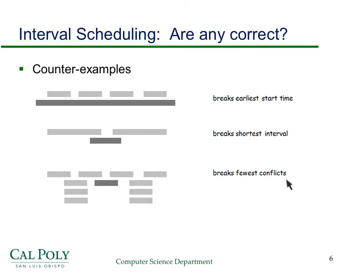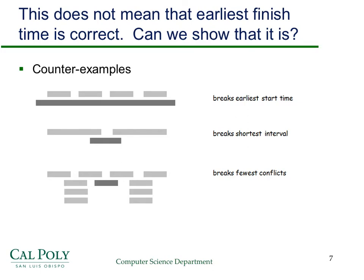The counterexample for fewest conflicts is the most complex. If you pick the job with the fewest conflicts — the one that conflicts with only two others — you can't pick either of those two conflicting jobs. So you might end up picking only three jobs total. But it's pretty obvious that you can actually get four jobs in a compatible set. These counterexamples don't mean that earliest finish time is correct — they just eliminate these three candidates. The question now is: can we show that earliest finish time is a correct greedy algorithm for maximizing the number of compatible intervals?